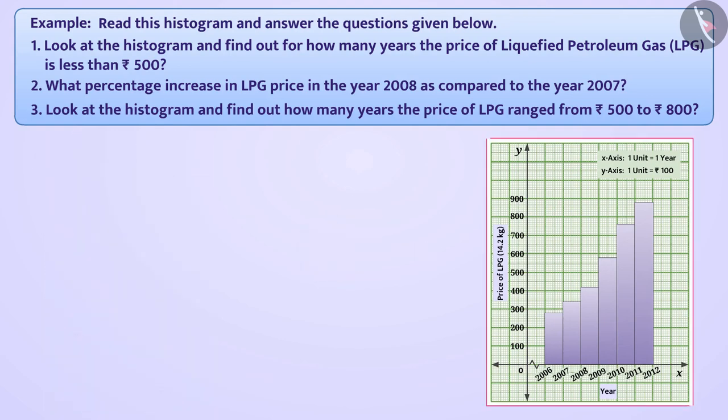The histogram shown here shows the change in the price of LPG over different years. In which, the x-axis represents years and y-axis represents price of LPG per 14.2 kg. Here, the width of each class interval is the same, i.e. one year, and the scale of y-axis in one unit is equal to 100 rupees.